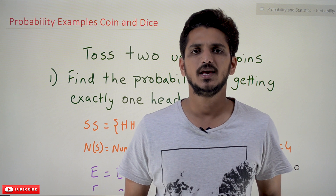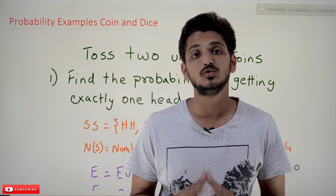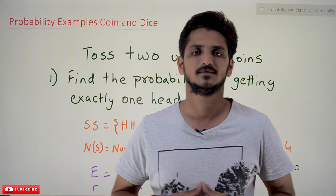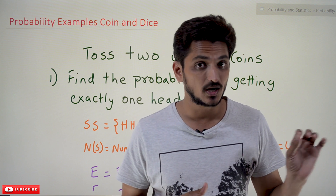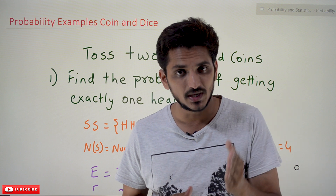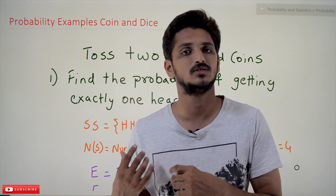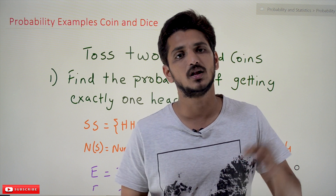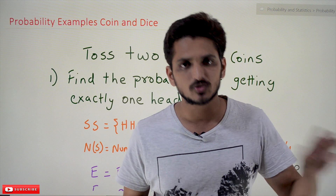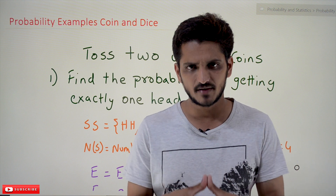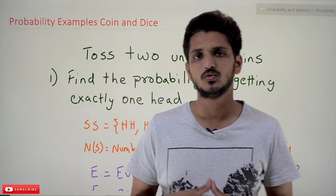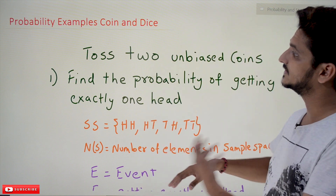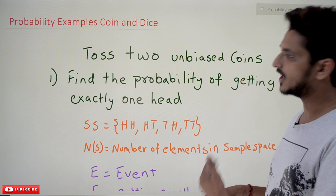Hi, welcome to Learning Monkey. I am Raghu. In this class we do some practice examples — probability examples on coins and dice. In previous classes we clearly discussed about what probability means and the terminology required, such as event, sample space, and all those definitions. Please watch those classes and come back here; the link for the playlist is provided in the description below. This is our first class on probability examples.